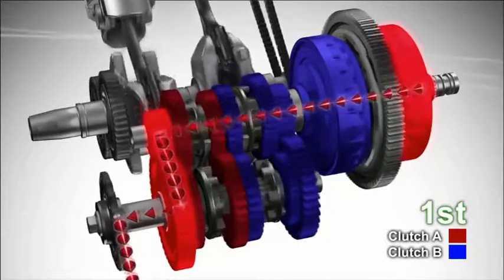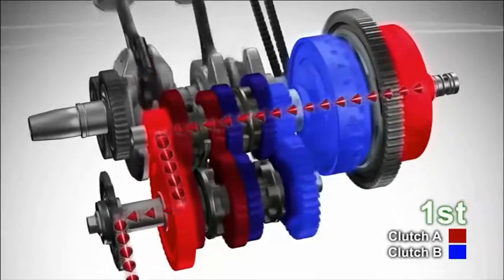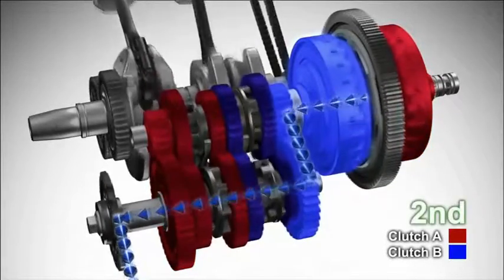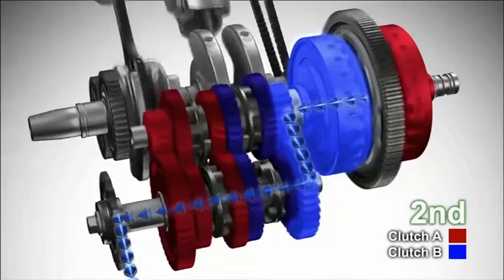As speed increases, clutch B is shifted from neutral to the second position and starts to engage as clutch A motorway disengages and goes into standby, putting its set of gears into neutral.